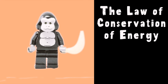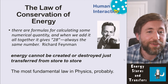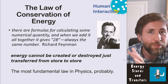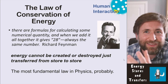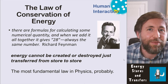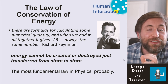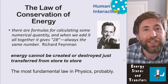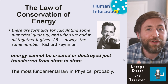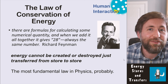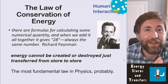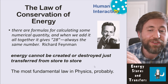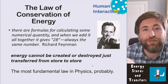Remember what Feynman said: there are formulas for calculating some numerical quantity, and when we add it all together it always gives the same number. We always have the same value of energy at the start as at the end. In a closed system, whenever we change how objects are arranged, the energy before equals the energy after — just stored in different ways. This is the law of conservation of energy: energy cannot be created or destroyed, just transferred from store to store.